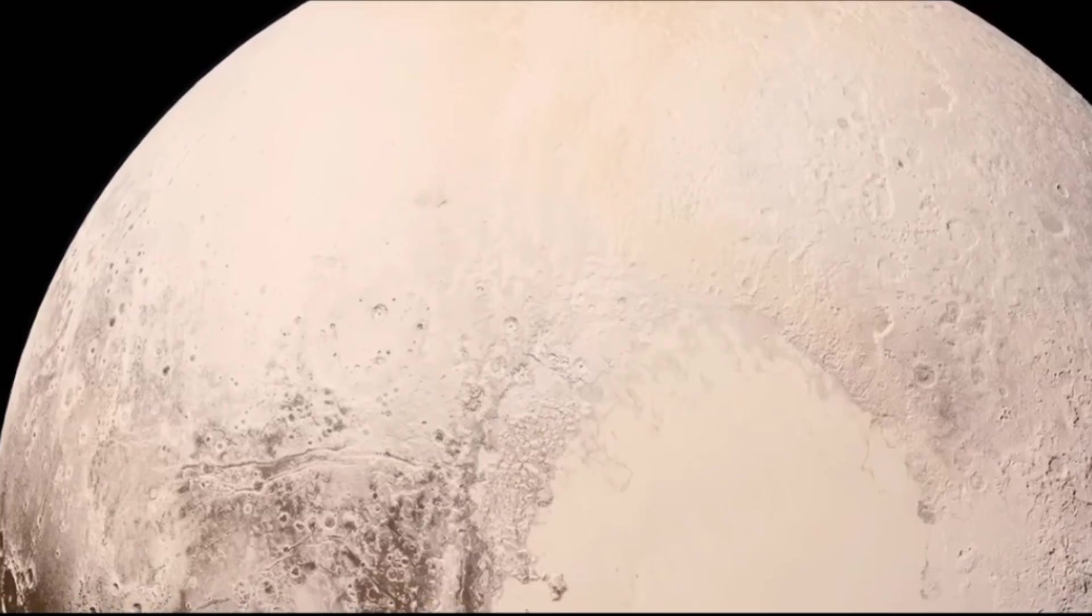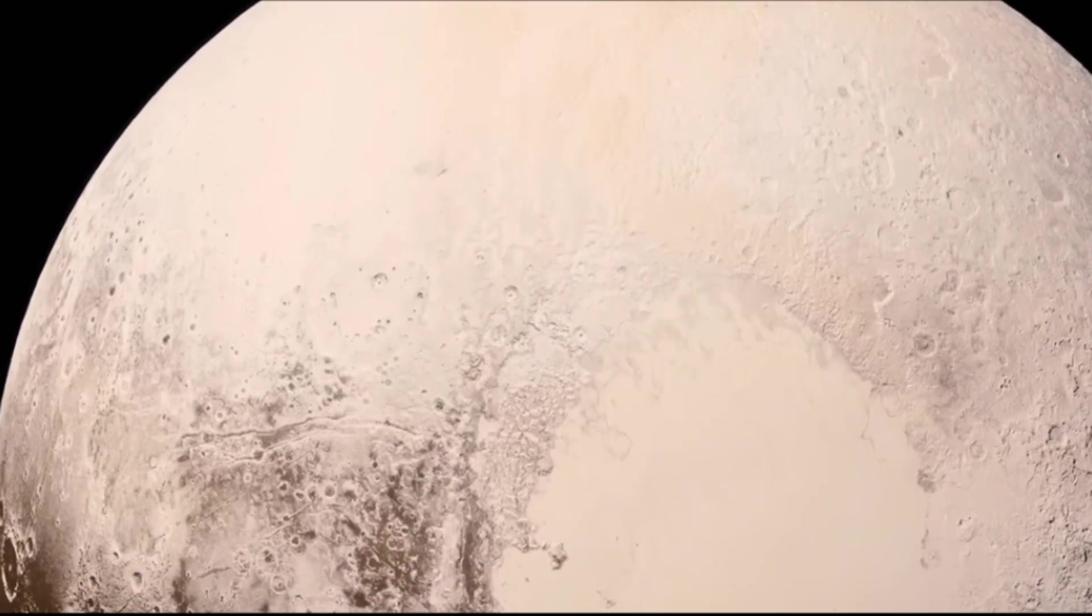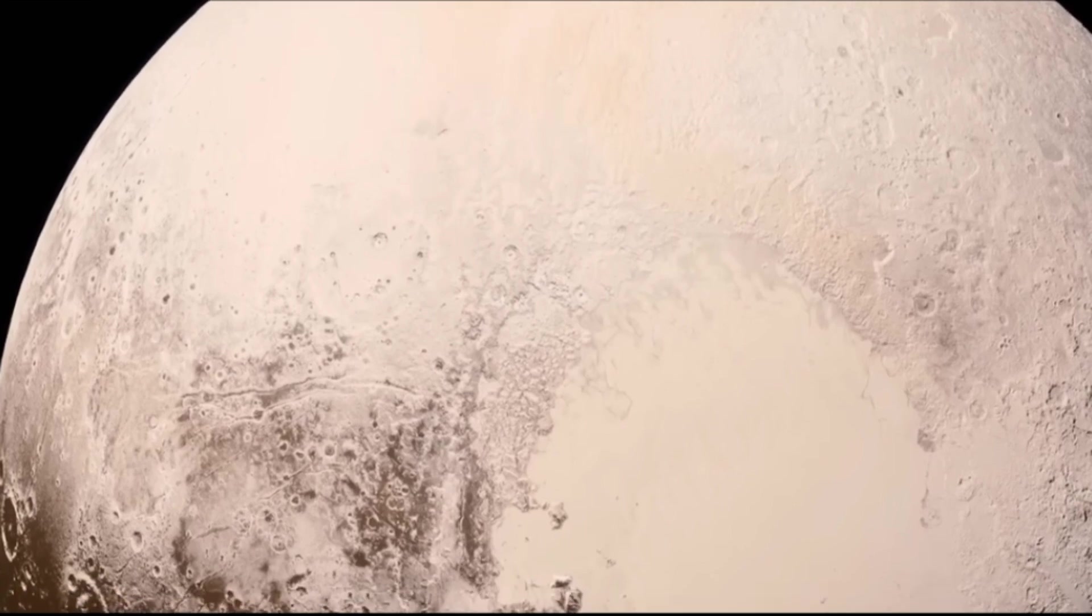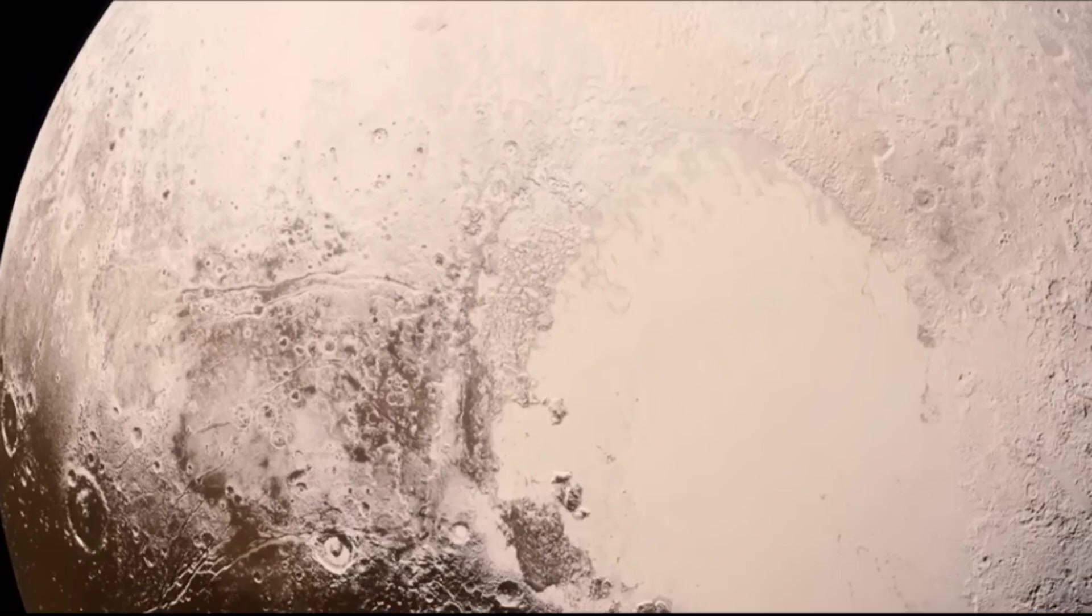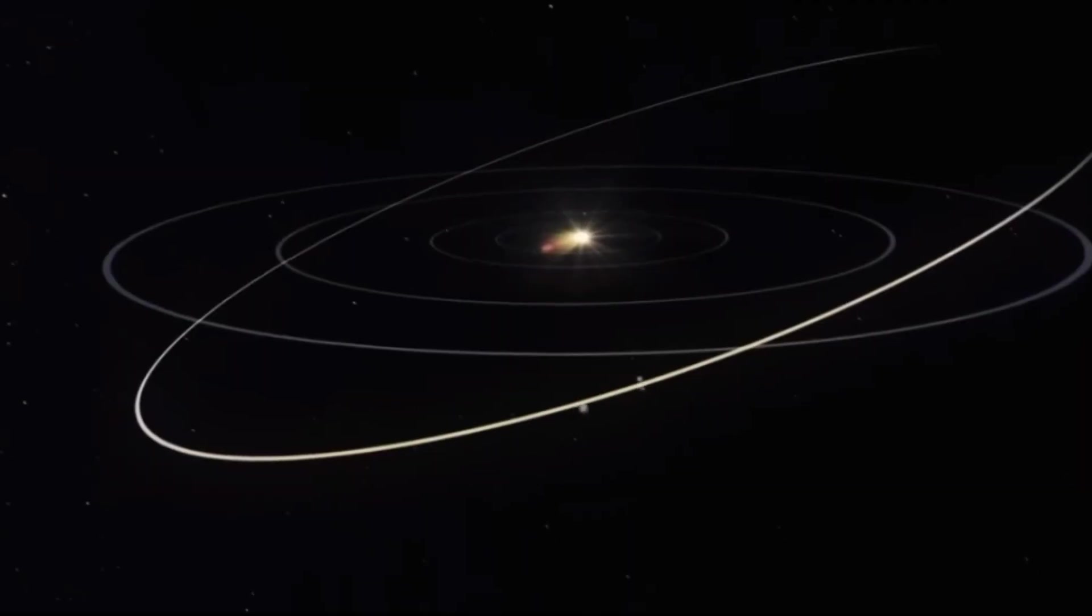One of the most noticeable features on Pluto's surface is the Sputnik Planitia, a huge basin over 621 miles long, which accounts for about 5% of the planet's total area. Scientists believe that the basin may have formed as a result of an ancient asteroid impact, which has since transformed.